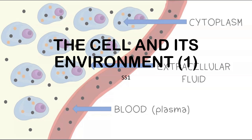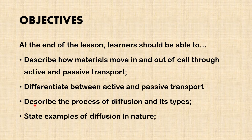Hello, it's time for another biology lesson. Today we'll be talking about the cell and its environment — this is the first part of a two-part video. The objective of this lesson is to help learners describe how materials move in and out of the cell through active and passive transport, and to differentiate between active and passive transport, and describe the process of diffusion and its types.